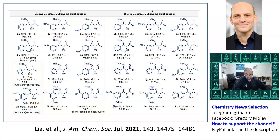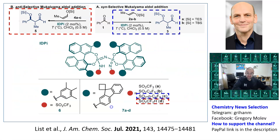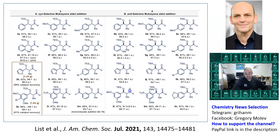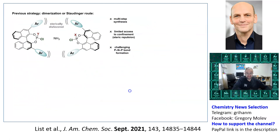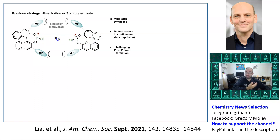Perhaps you ask yourself: aren't those catalysts expensive and problematic to make? Well, yes, it looks complicated. Indeed it required several steps to make the catalyst — first making each reagent separately, then reacting each with ammonia one by one, then isolating and purifying. It could be complicated.